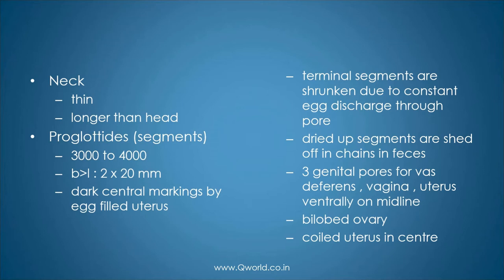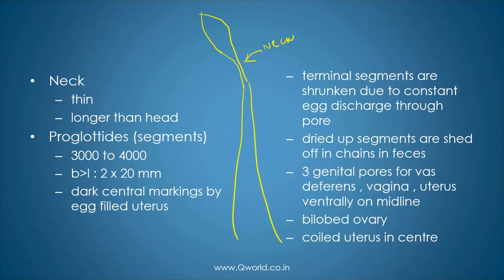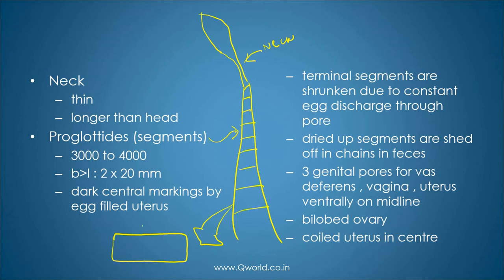It has a thin and longer neck compared to the head. So this is the spoon-shaped head, followed by a long neck, and then the body. The body is made up of various segments. When you see individual segments very closely, they are more broader than long — that means the breadth is more than the length.